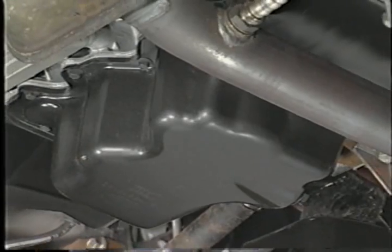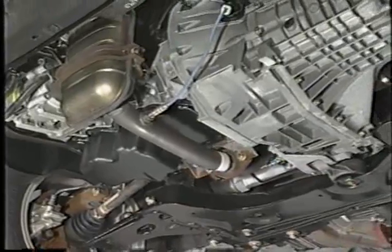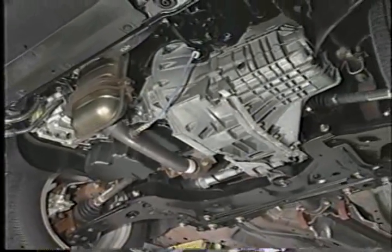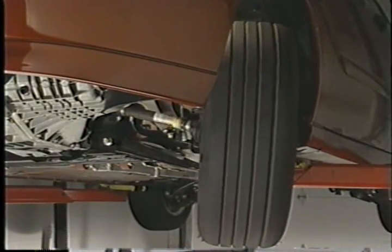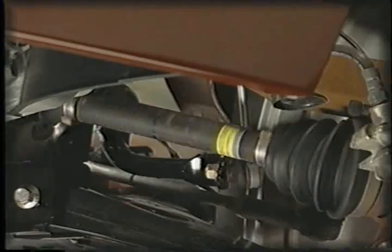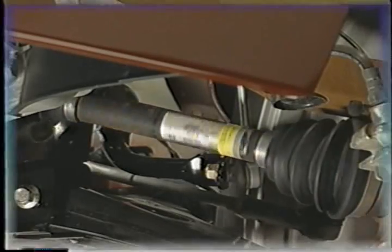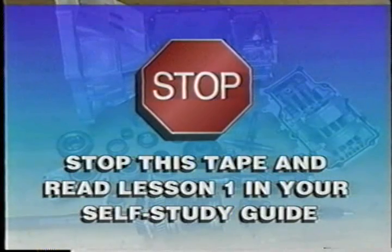Front wheel drive vehicles use a unique type of transmission system called a transaxle. It combines both the transmission and differential into one unit. However, because the driving wheels on a front wheel drive vehicle are also used for steering, a special type of drive shaft is needed. Front wheel drive shafts are known as half shafts. Each of these systems will be described in detail in this self-study course. Stop this tape now and read lesson one in your self-study guide. After answering the review questions, restart the tape and watch lesson two.